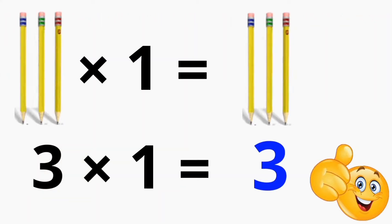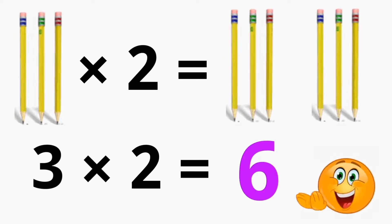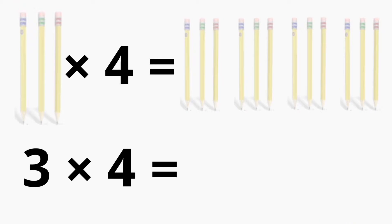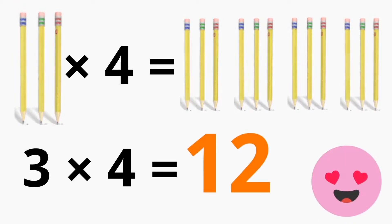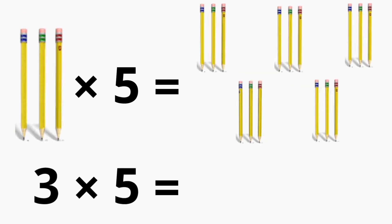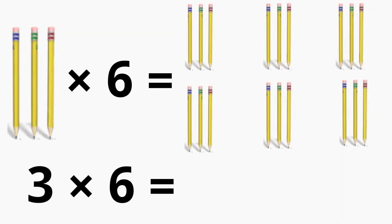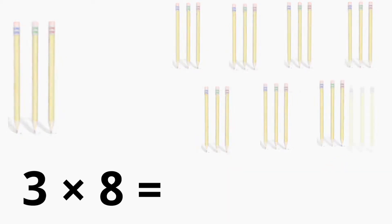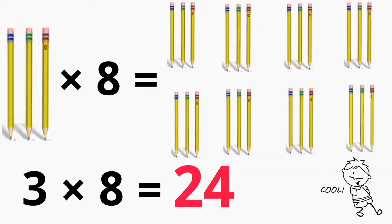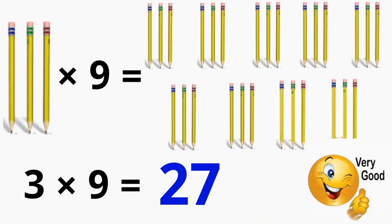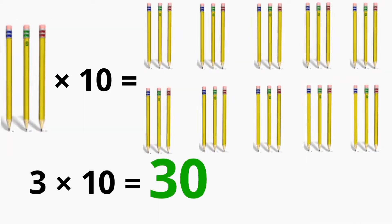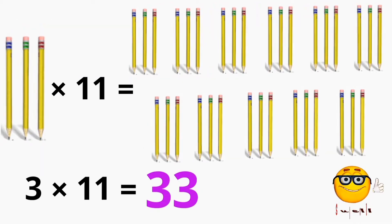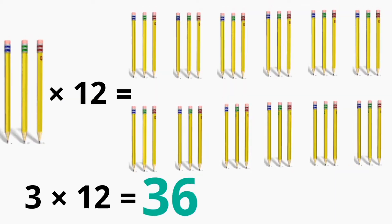3 x 1 is 3, 3 x 2 is 6, 3 x 3 is 9, 3 x 4 is 12, 3 x 5 is 15, 3 x 6 is 18, 3 x 7 is 21, 3 x 8 is 24, 3 x 9 is 27, 3 x 10 is 30, 3 x 11 is 33, 3 x 12 is 36.